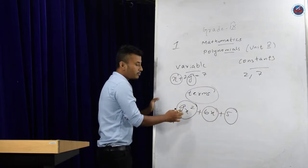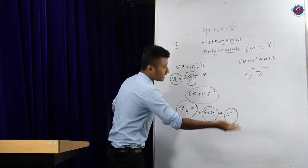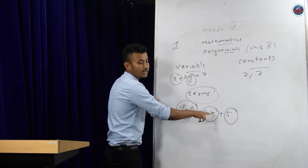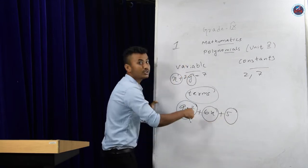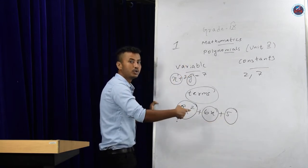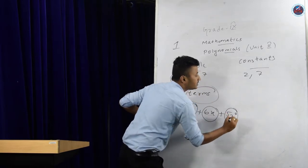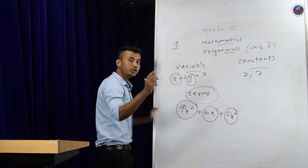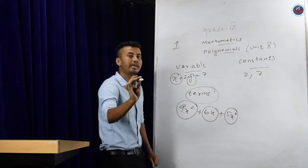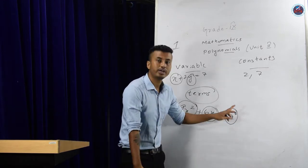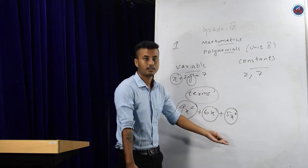In the first term, 9 is the constant and x is the variable. In the second term, 6 is the constant and x is the variable. In the last term, 5 is the constant — can you see any variable? No, but it does exist. The variable here is x to the power 0. Any number to the power 0 is 1, so x⁰ is 1, and 5 into 1 is 5. It becomes the same again.